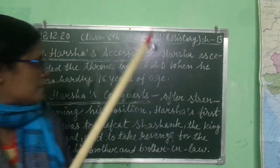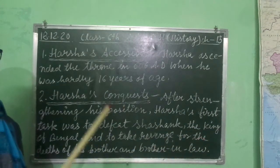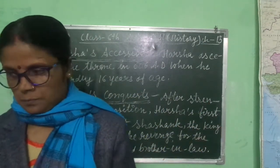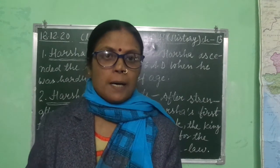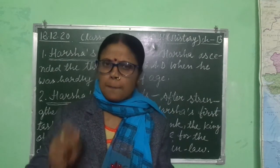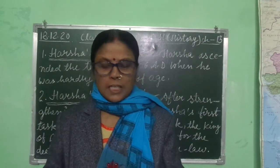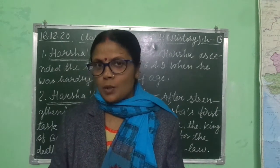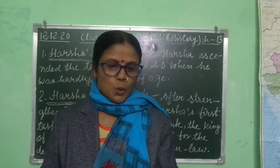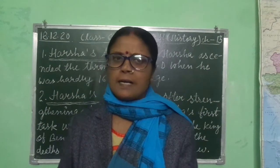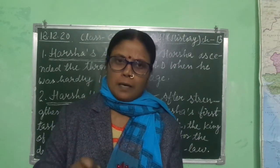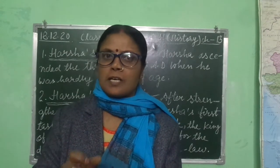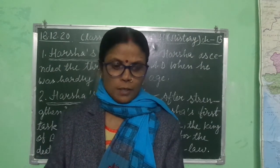Second topic: Harsha's Conquest. Conquest means Vijay — now we learn about Harsha's victories. After strengthening his position and power — apni position aur power ki briddhi ke baad — Harsha's first task was to defeat Shashank, the king of Bengal, and to take revenge for the deaths of his brother and brother-in-law. Revenge means badla.